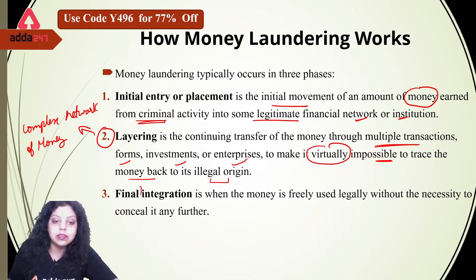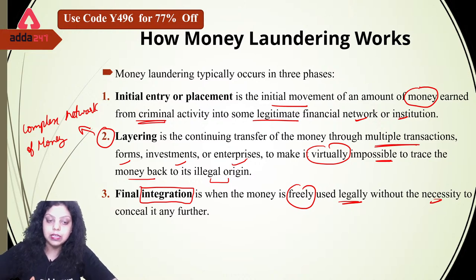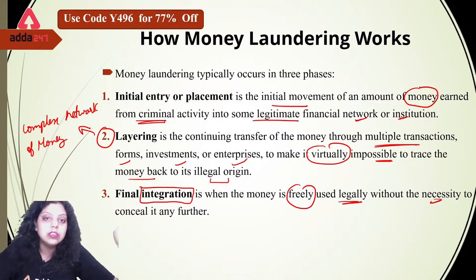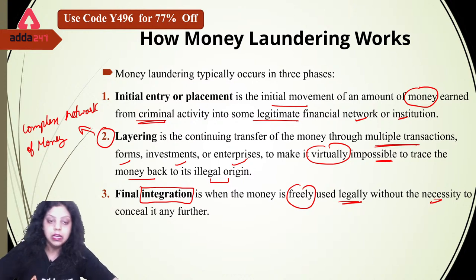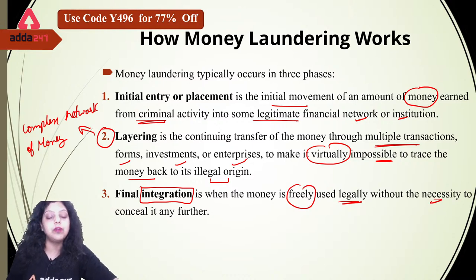The third and final stage is integration — when the money is freely used legally without the necessity to conceal it any further. When you are capable of using your assets or money legally in the country without hiding it from officials, that is known as integration. In the integration stage, the money is returned to the criminal from what seems to be a legitimate source. Having placed the money initially as cash and layered it through a number of financial transactions, the criminal proceeds are now fully integrated into the financial system and can be used for any purpose. There is no suspicious transaction to be found in the integration stage.